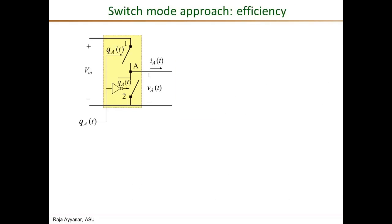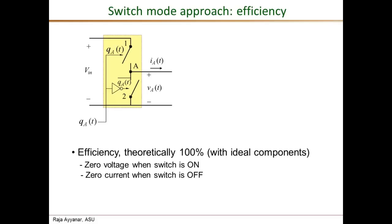We've seen that the switch mode power converter can achieve good regulation by controlling the on-interval duration and provide good output voltage quality with an appropriate LC filter. But how does it result in high efficiency? Let's look at the waveforms of the switch voltage VT and current IT. Consider the top switch — when it is on, it is an ideal switch, so the voltage across it is zero.